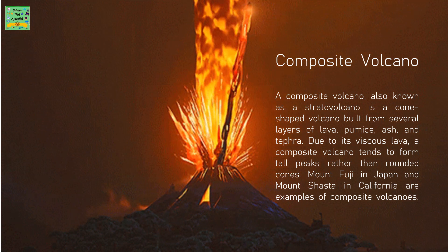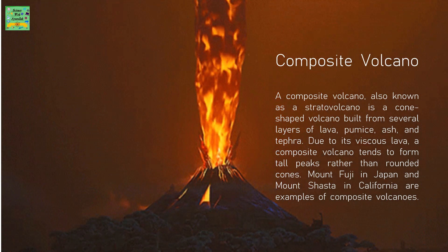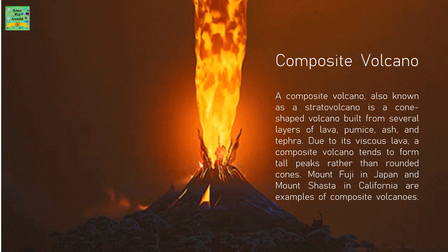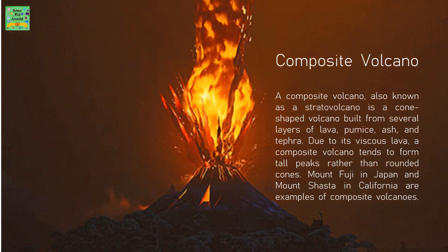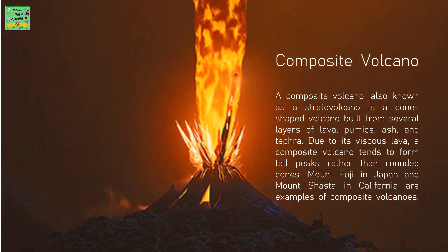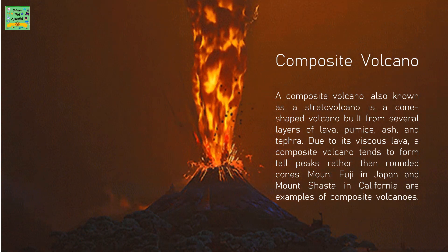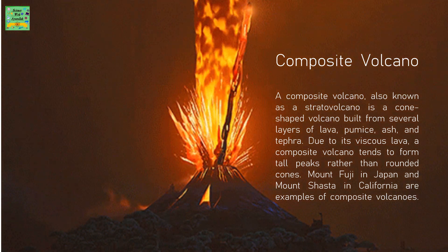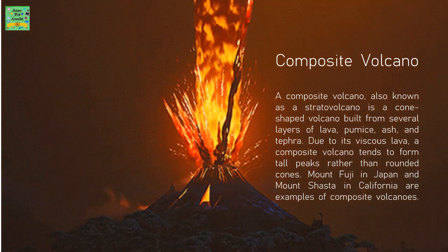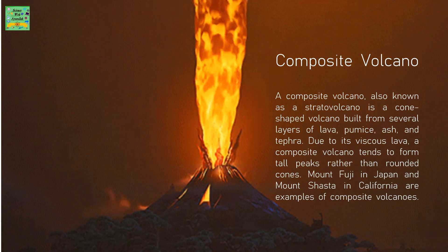Due to its viscous lava, a composite volcano tends to form tall peaks rather than rounded cones. Mount Fuji in Japan and Mount Shasta in California are examples of composite volcanoes.